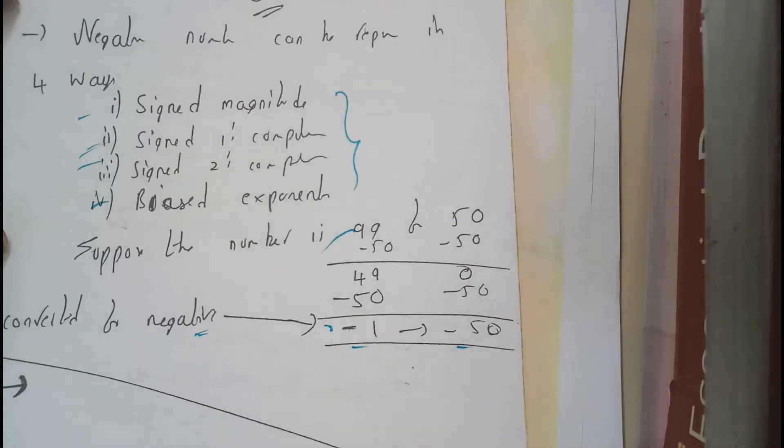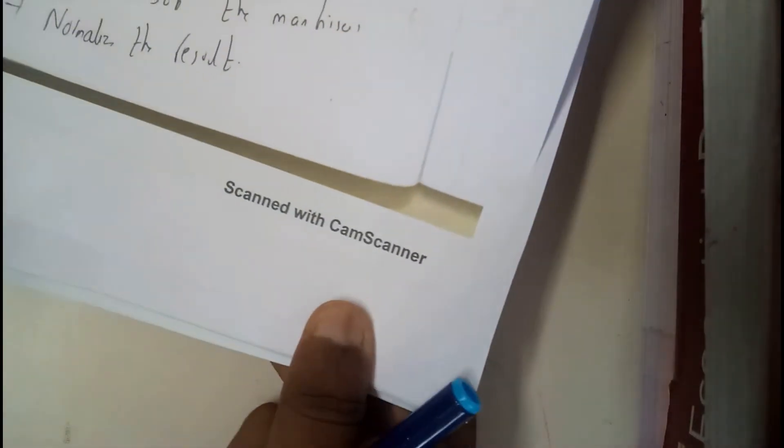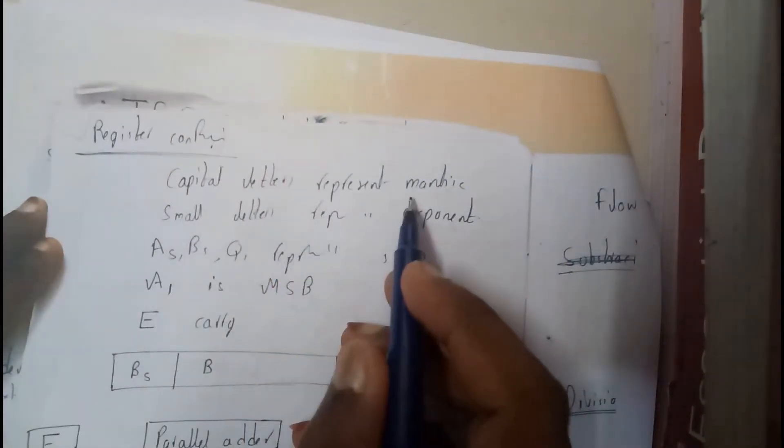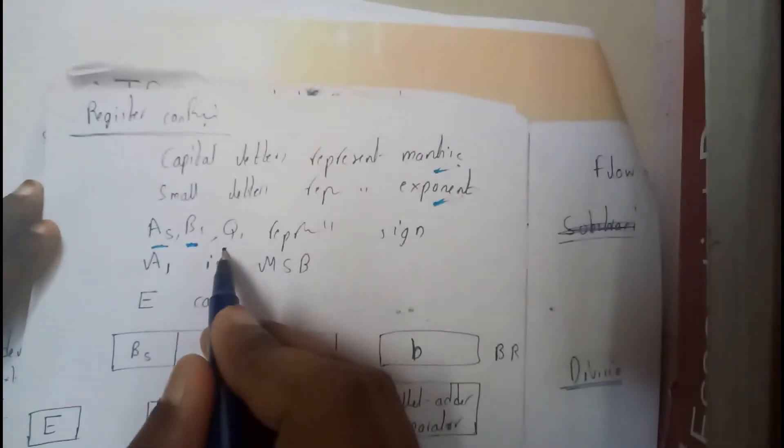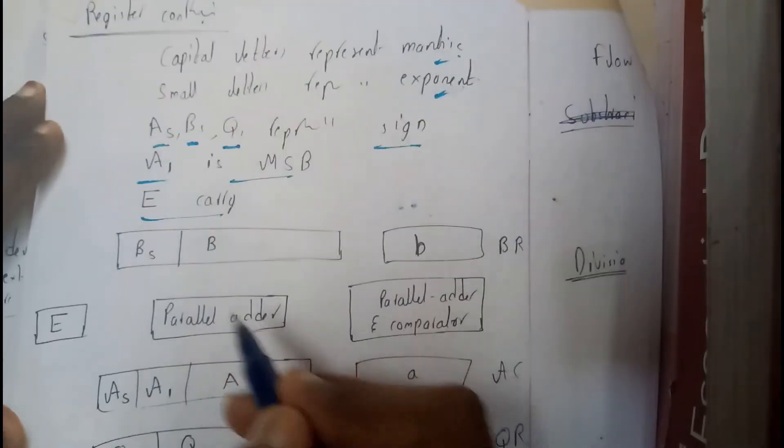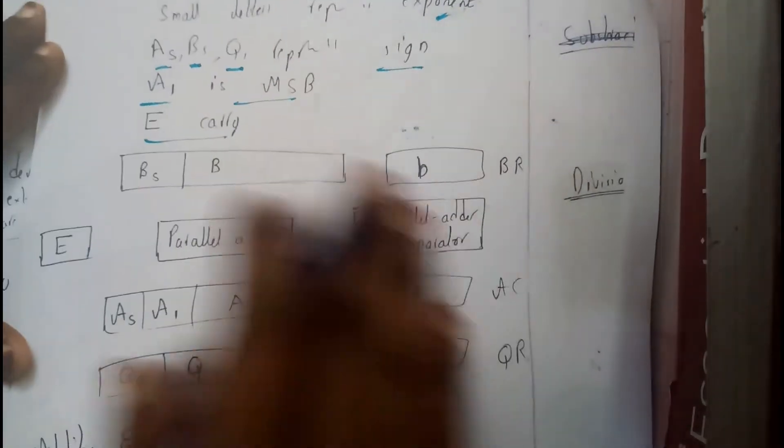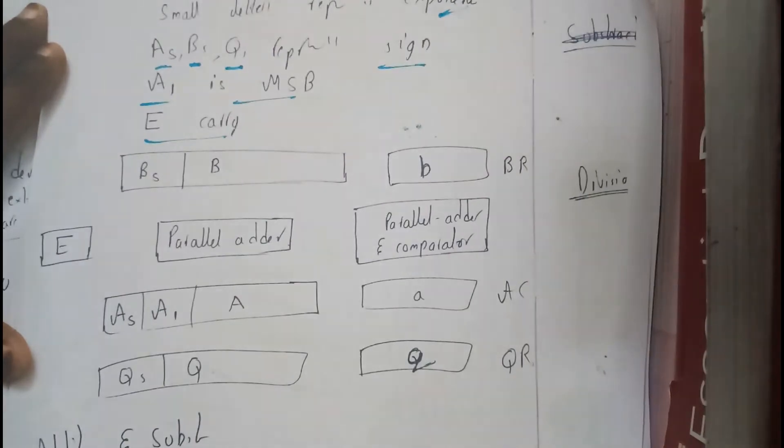Basically, there are few register configurations which we'll be using here. Capital letters represent mantissa and small letters represent exponent. A, S, B, S, and Q, S represent the sign. A is MSB, E is carry. So this is all the representation of all those things.